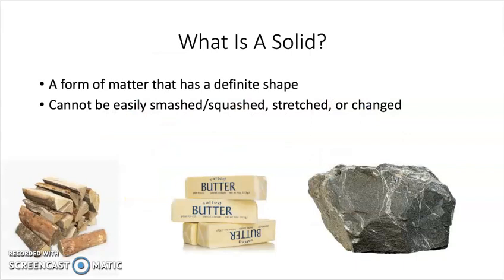What is a solid? A solid is a form of matter that has a definite shape. It cannot be easily smashed, squashed, stretched, or changed. If you look below, there are some examples of solids: wood, butter, and a big rock.